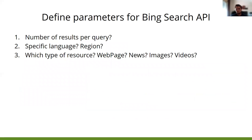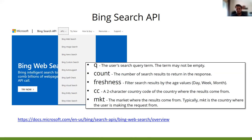To do a more targeted search, we have to answer a set of questions. First, what is the number of results per query — 10, 20? Do you want a specific language, a specific region? Which type of resources? And so on. Based on the answers to these questions, it is necessary to specify the parameters explained before.